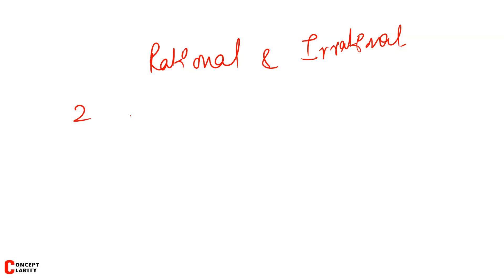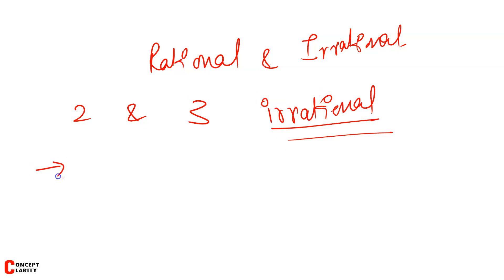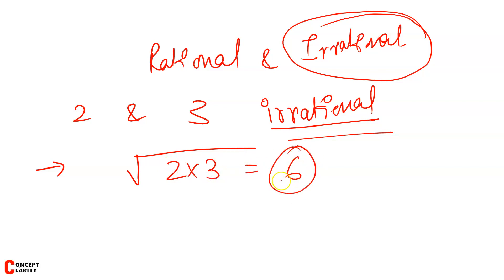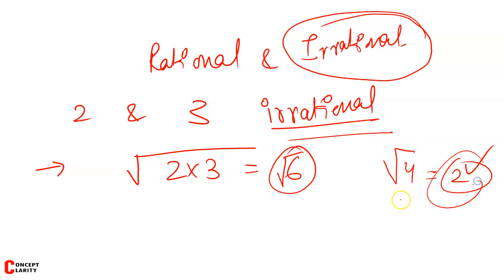So, I have to tell two irrational numbers that are between 2 and 3. This is a simple concept — irrational numbers are numbers that are under root. If we take under root of 2 into 3, that is under root of 6, we know that 6 is not a perfect square. So we can say that √6 is irrational. Root 6 will be 2 point something, so this is an irrational number.